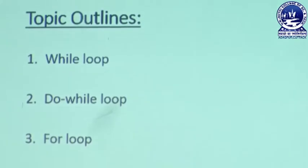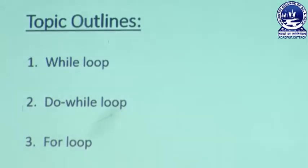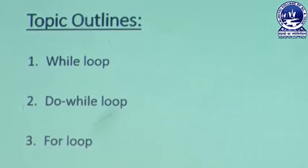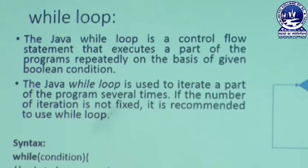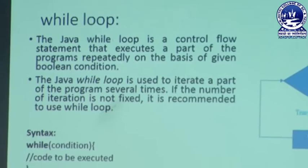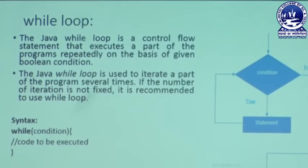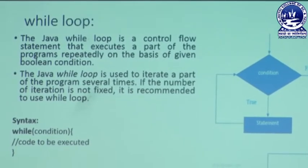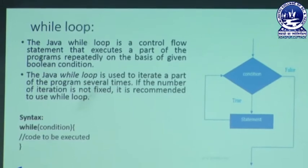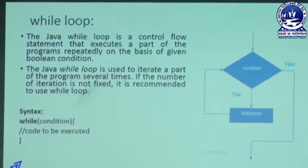To implement this concept in our program, we can use three ways of programming structure: first, the while-loop structure; second, the do-while-loop structure; then the for-loop structure. First of all, we can discuss the concept of while-loop — what is the meaning of while-loop, what is the flowchart, and what is the syntax of while-loop, and how to write a simple program using while-loop.